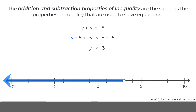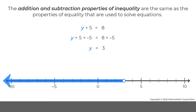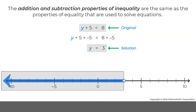So, the solution to the original inequality is y less than 3. Note, both the original inequality and the solution have the same set of values that make them true.